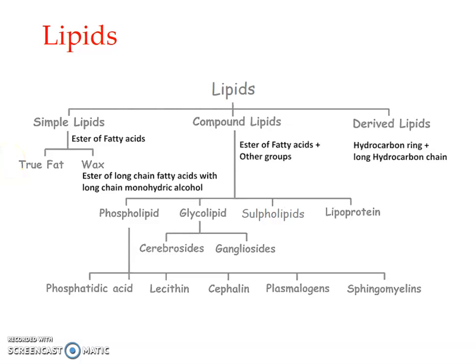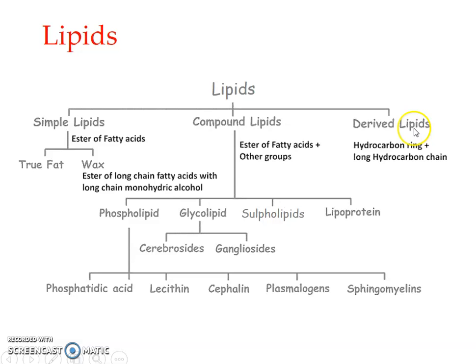Welcome back. We will be discussing the classification of lipids. Lipids are classified into simple lipids, compound lipids (otherwise known as conjugated lipids), and derived lipids. Simple lipids, as the name suggests, are simply the lipids alone — they are esters of fatty acids. Compound or conjugated lipids contain other non-lipid compounds in addition to the esters of fatty acids. Derived lipids are hydrophobic compounds with a long hydrocarbon chain attached to a hydrocarbon ring.